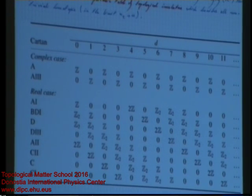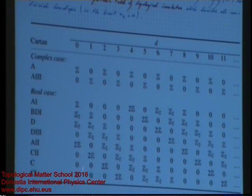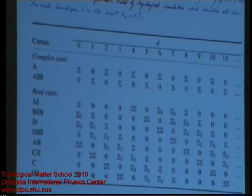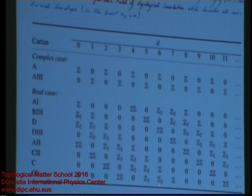If topology is possible, there are two fundamental options: either you get an integer number — whatever you compute will be one of the integers — or you just have a binary alternative, ℤ₂. ℤ₂ insulators are a little more involved in their description. Notice also this diagonal structure in the table — there is a perfect symmetry along the diagonals.